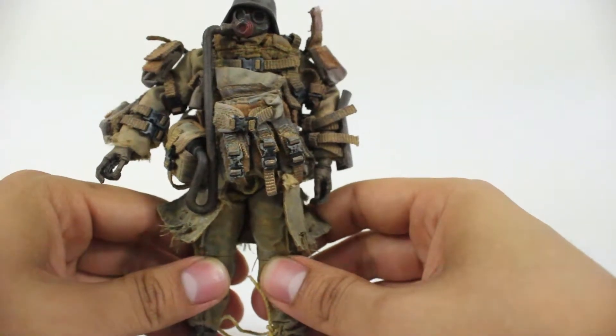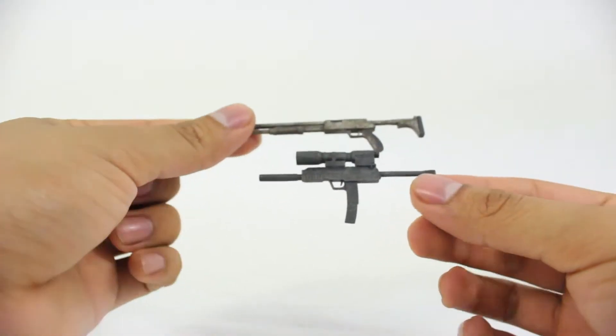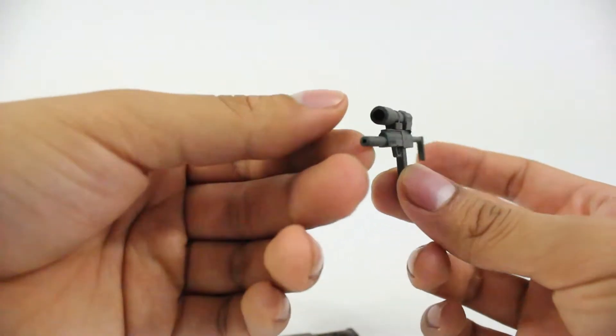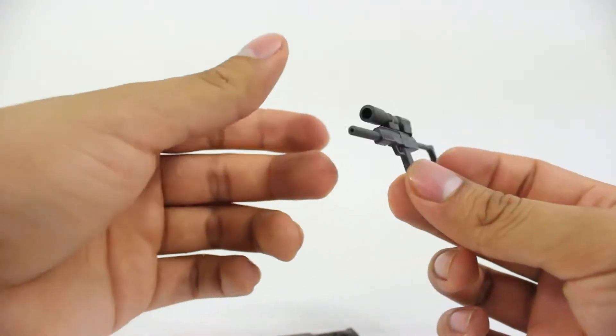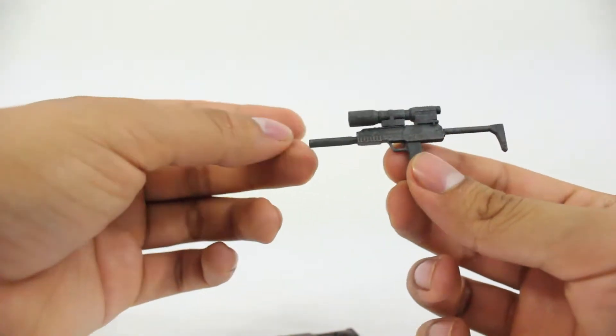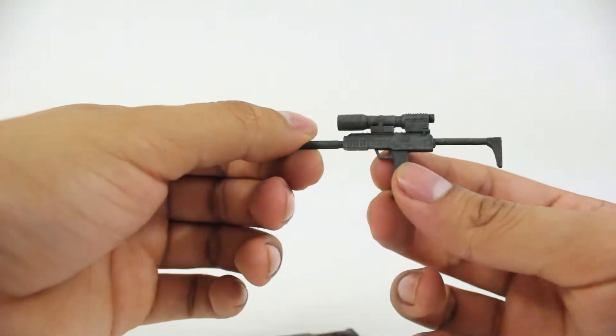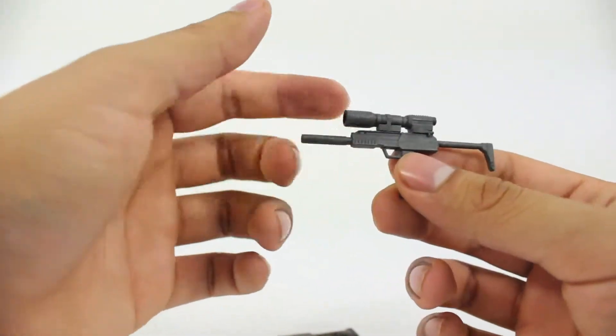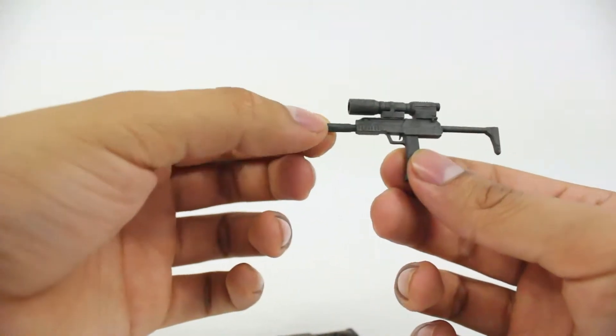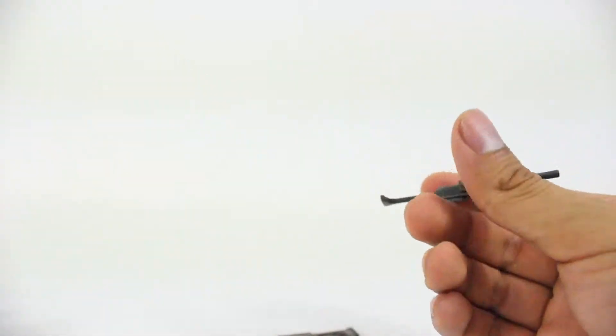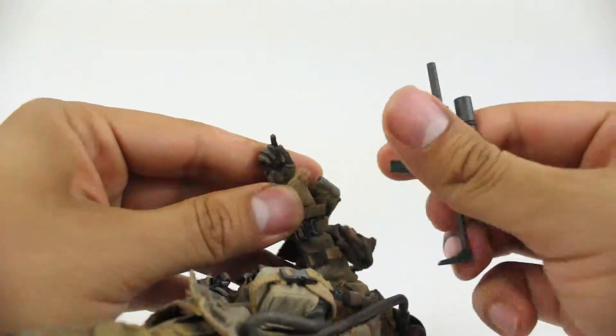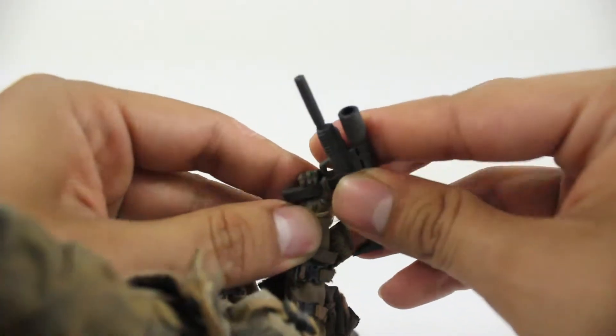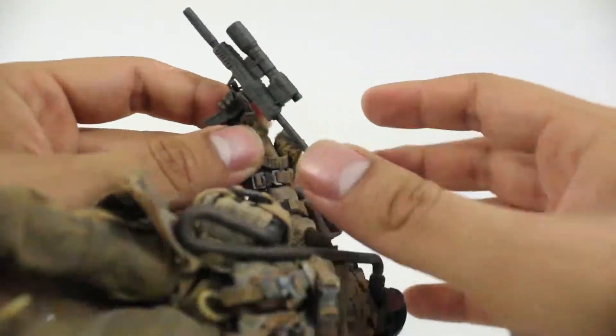So that's about it for articulation. Now we're gonna move on to the pouches and accessories. Each grunt comes with two weapons. The first being this kind of SMG, this little pistol thing. It's more or less a tiny kind of submachine gun with a scope. It's really small.